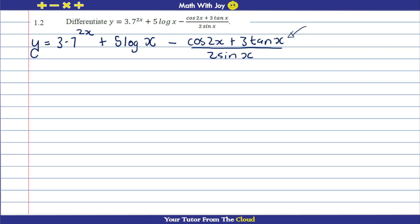The first thing I'd like to do is simplify this fraction as far as I can, so that I have separate terms with their own trig ratios and then I'll be able to differentiate — rather than going the quotient rule method. So we have three times seven to the power of 2x plus five log x, and then we're going to split this fraction here.